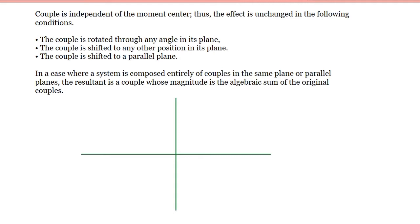For example, we have this couple here with the magnitude of F and the distance of d. Now if we are going to rotate this in the same location, we're just going to rotate this. For example, this would be now the direction of this F here and this F would be in this direction, as long as they are parallel of course. And now this is the d.